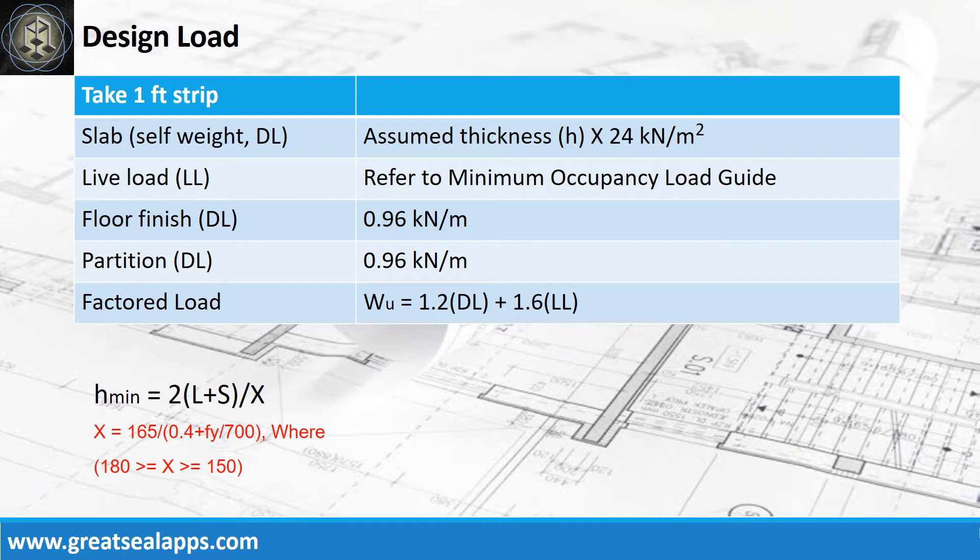Sum up all the dead load from self weight of slab, floor finish, and partition if any. Then get the live load from minimum occupancy load guide to get the factored load.